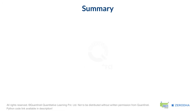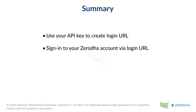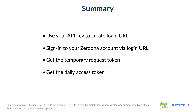Let us now summarize the whole process. First, you use your API key to create the login URL. Then, go to the login URL and complete the two-step verification to sign in to your Zerodha account. Then, get the temporary request token from the URL. And finally, use the request token and API secret to get the access token. You have now learned the authentication process.